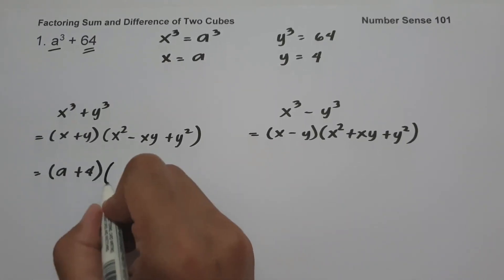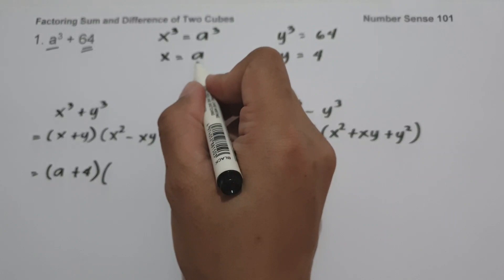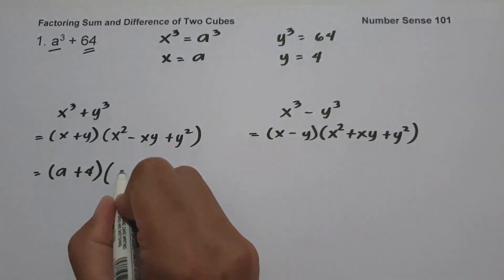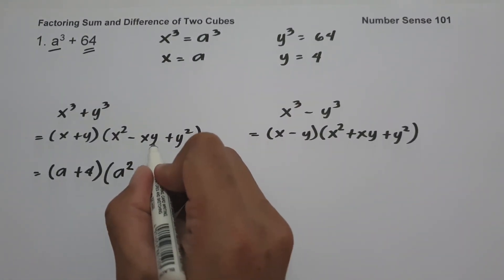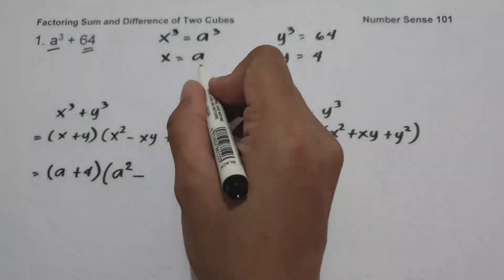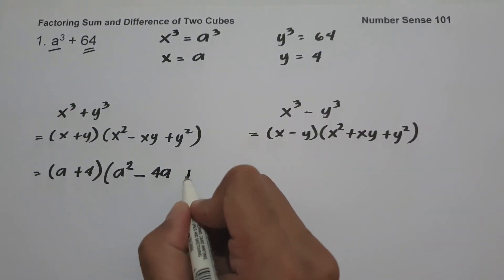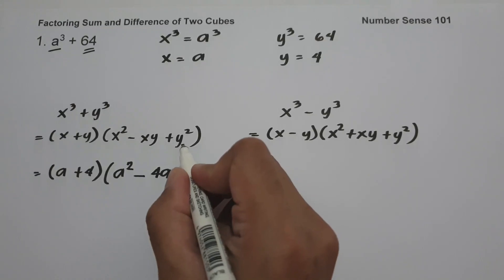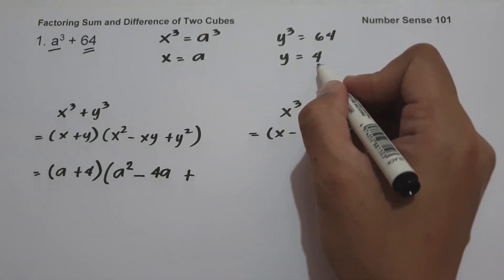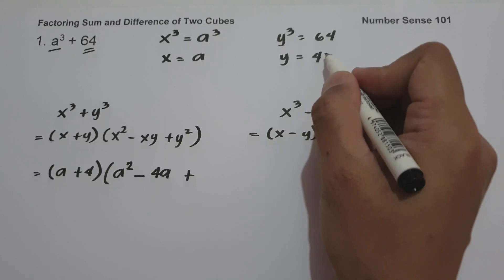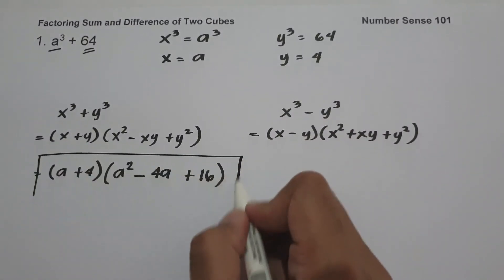Then we have x², and since the value of x is a, we have a². Then x times y is a times 4, which is 4a. Then y² — since the value of y is 4 — we have 4², which is 16. So the final answer is (a + 4)(a² − 4a + 16).